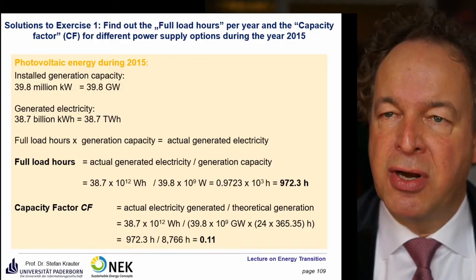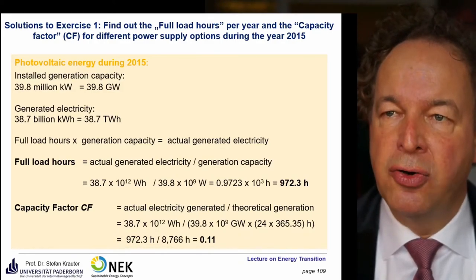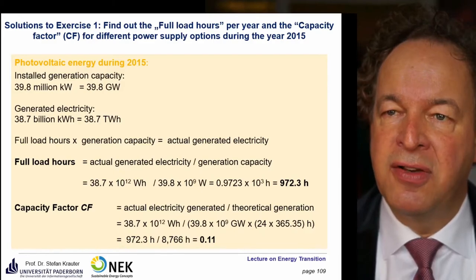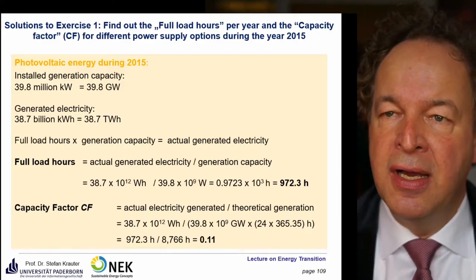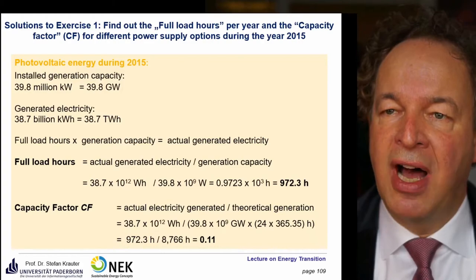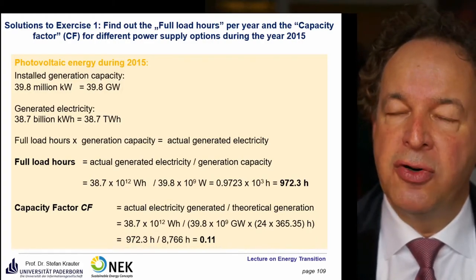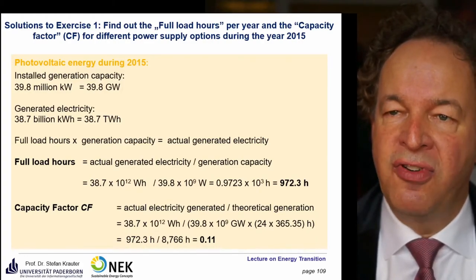So that's not very good. Germany is not a very sunny country. If you go to Southern Europe, you will have a capacity factor in the vicinity of 0.2, and in the desert you will find a capacity factor in the vicinity of 0.25.